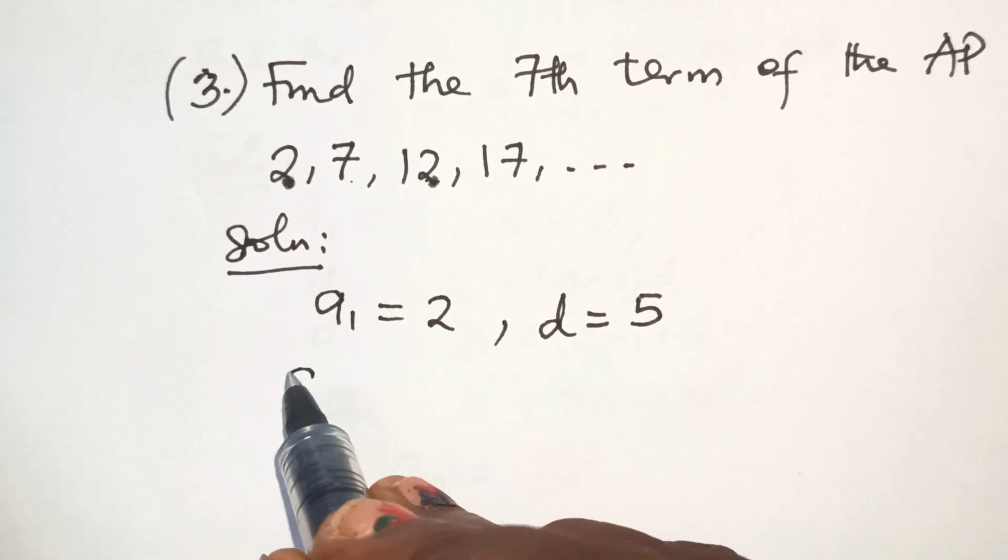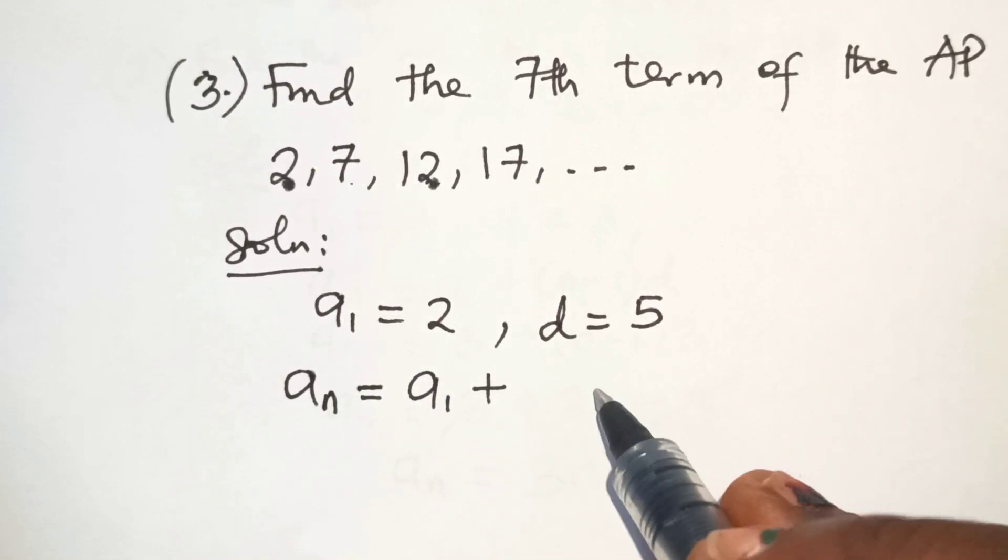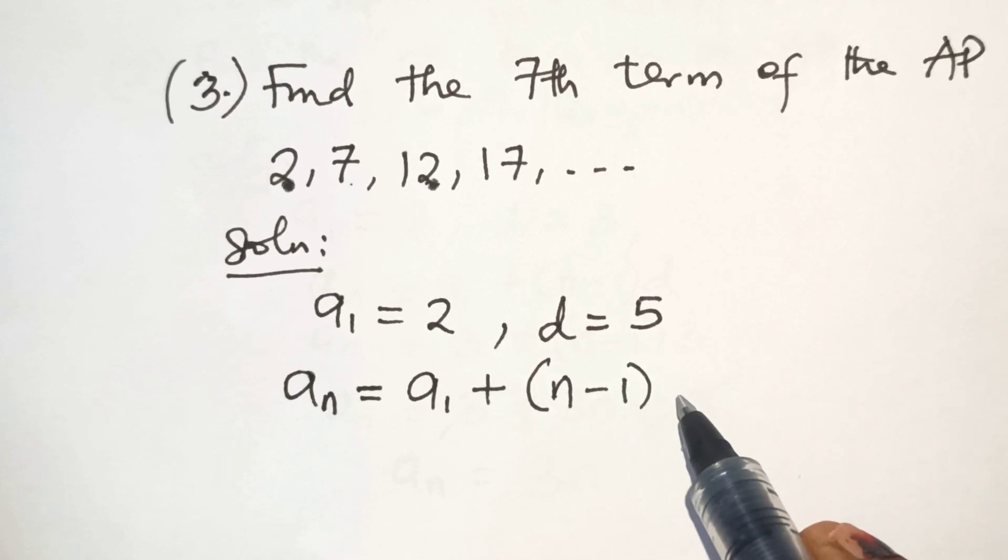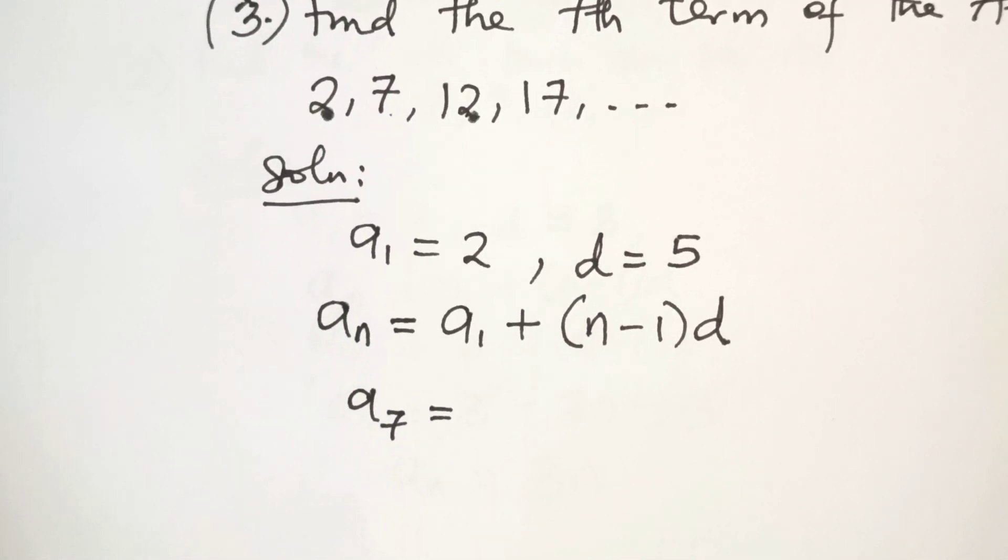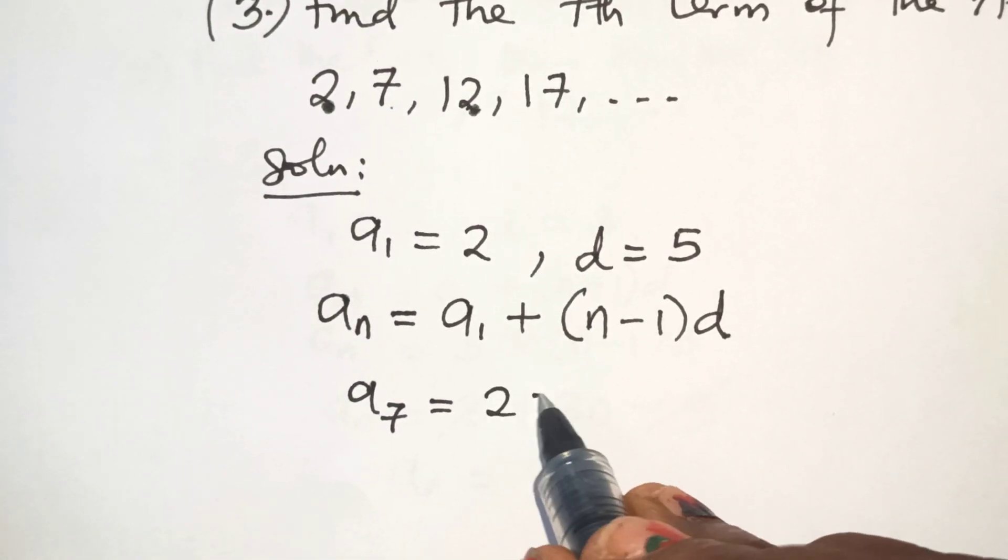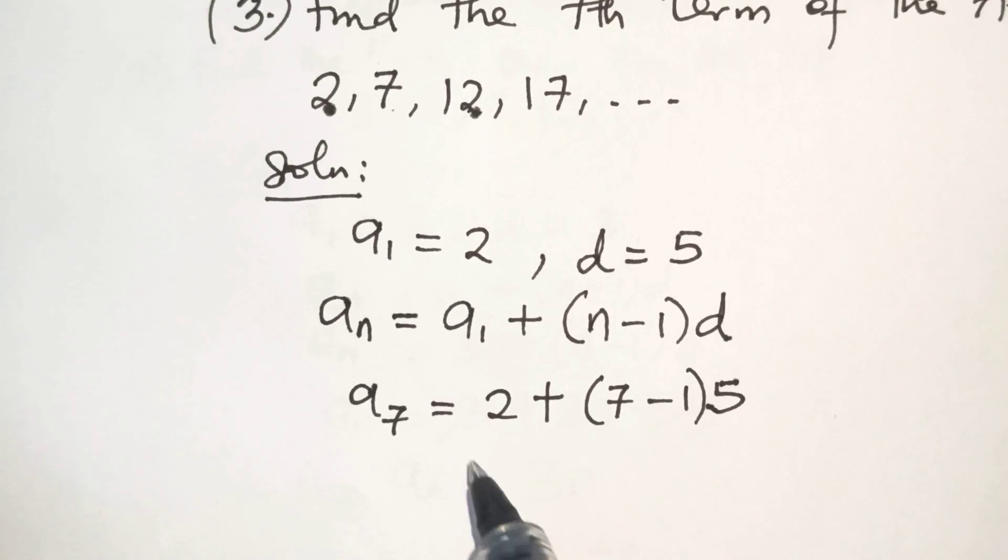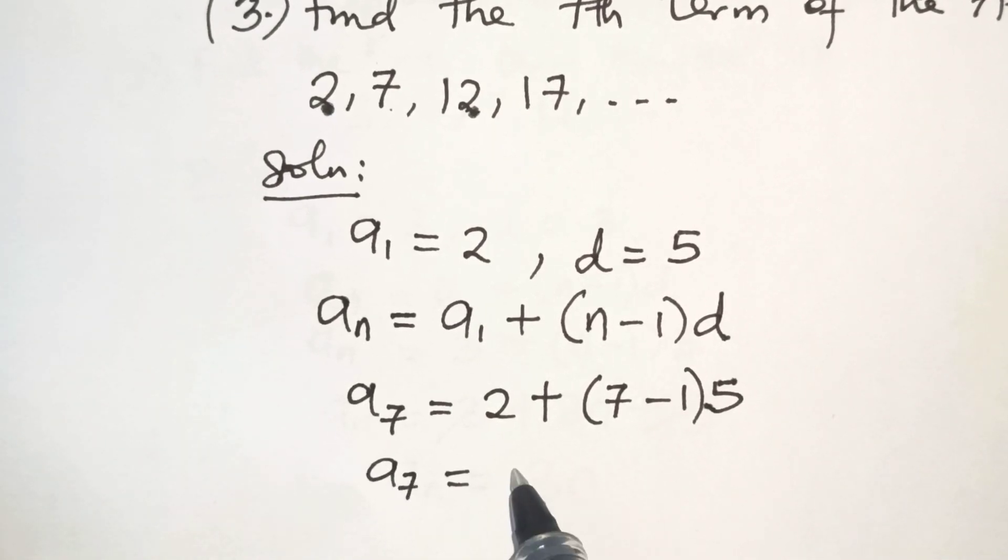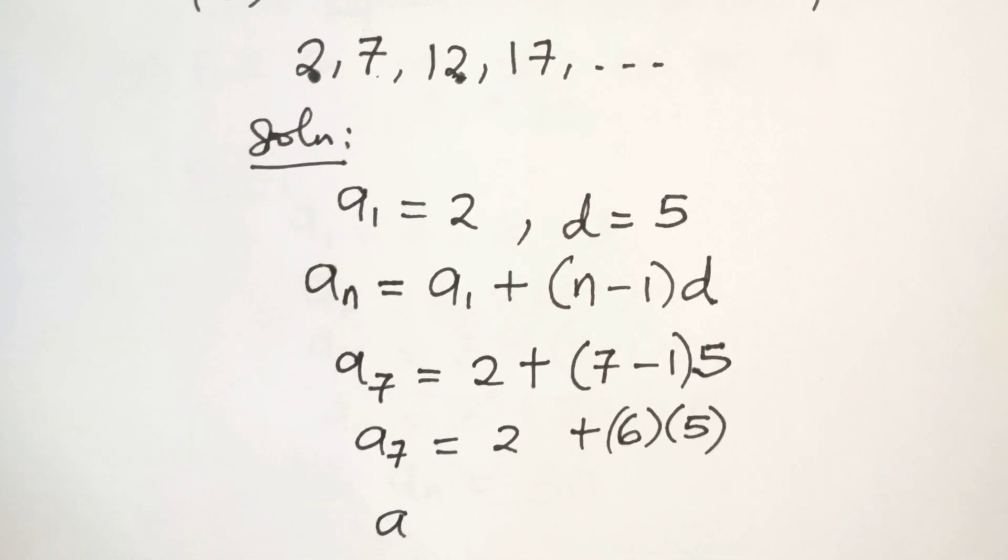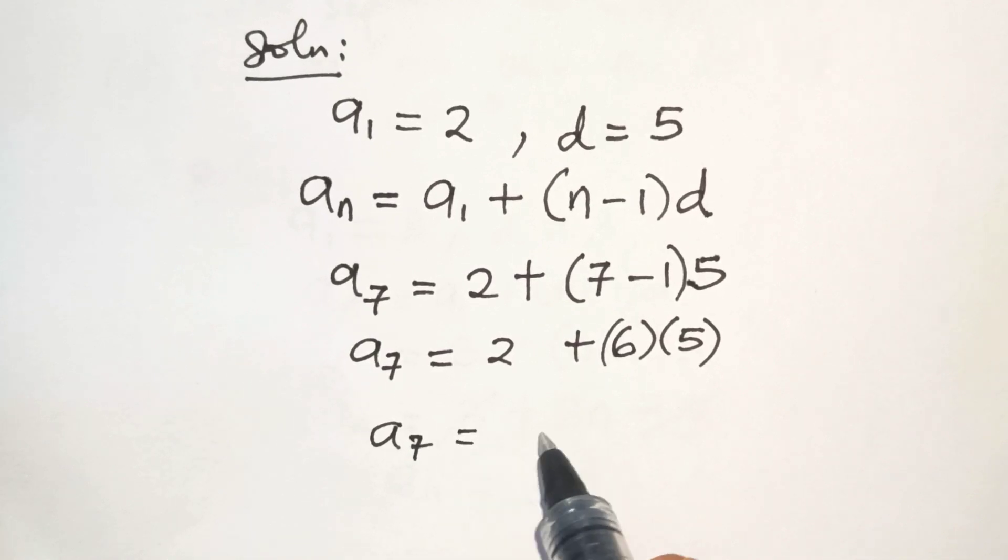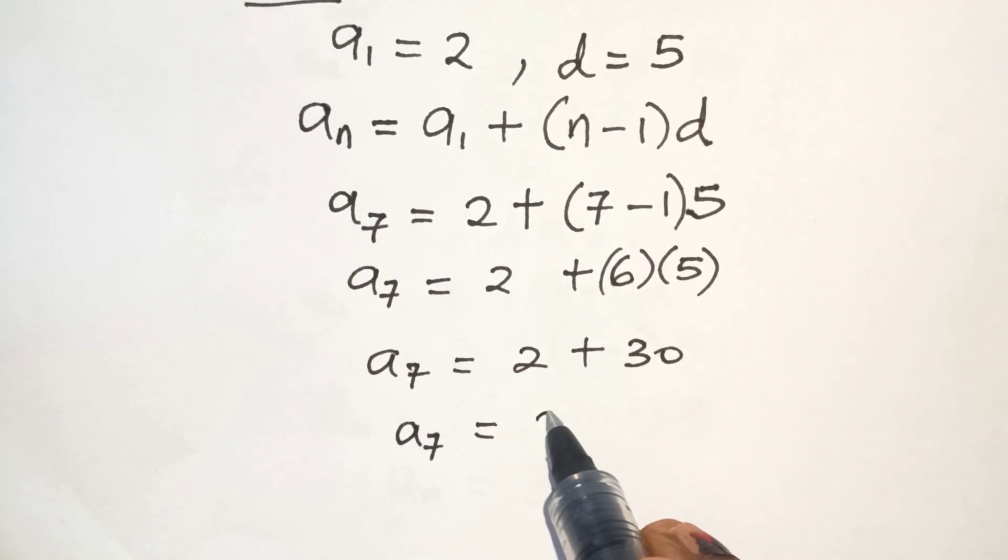Then AN is equal to A1 plus N minus 1 times D. So if we substitute the values, we have A7 is equal to 2 plus 7 minus 1 times 5. A7 is equal to 2 plus 6 times 5. So we have A7 is equal to 2 plus 30. That gives us A7 equal to 32.